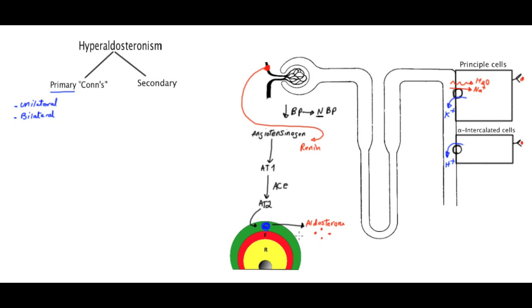Since the tumor is here, we're going to be making lots of aldosterone. This aldosterone is going to be doing its job, which is to reabsorb sodium and water and excrete potassium and hydrogen. So we're going to have hypernatremia, hypertension due to sodium and water reabsorption. We're also going to have hypokalemia and metabolic alkalosis. The reason for hypokalemia and metabolic alkalosis is that we are losing potassium and hydrogen ions, which are being excreted in the urine.